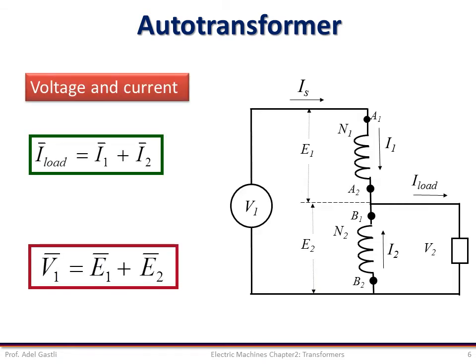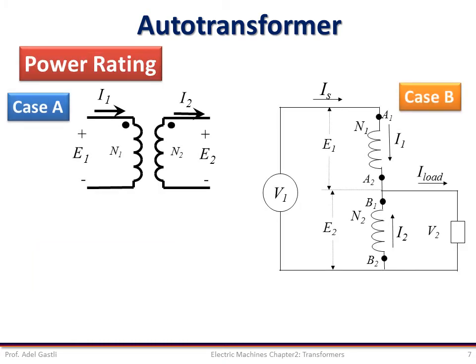Based on this equivalent circuit, we can write the voltage and current equations as shown here. However, if we compare the power transfer capabilities of the same piece of equipment, when connected as a normal two isolated windings, primary and secondary, and when connected as an autotransformer, then we can write the following.